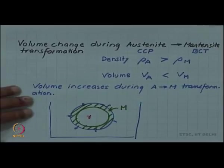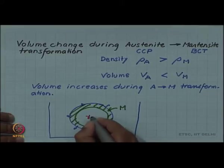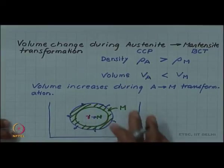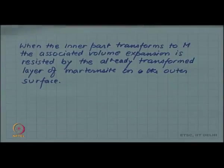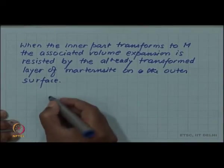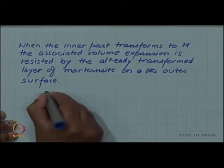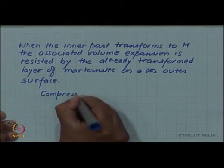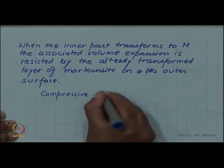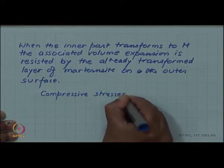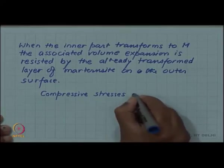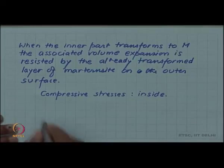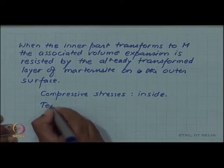When this gamma wants to transform to martensite, it will also like to expand. That expansion is resisted, this will lead to compressive stresses. Compressive stresses on inside and correspondingly tensile stresses on the surface.